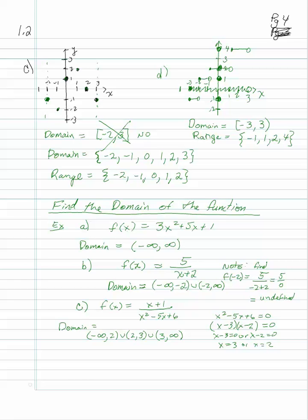So you have to throw out anything that makes it undefined. For a rational expression — a fraction — set the denominator equal to zero and exclude those values. The other thing to look for is square roots: the radicand must be greater than or equal to zero. So for f(x) = √(x-3), you set x minus 3 ≥ 0, solve to get x ≥ 3, and that's the domain: [3, ∞).